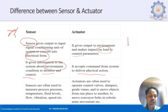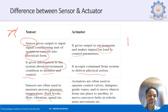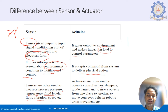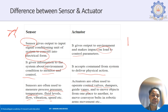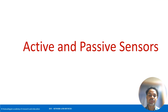Physical quantities measured by sensors include pressure, temperature, fluid levels, flow, vibration, speed, and more. For actuators, examples include controlling valves, dampers, guide vanes, and moving objects from one place to another.